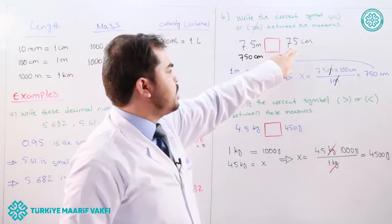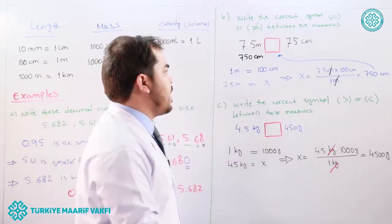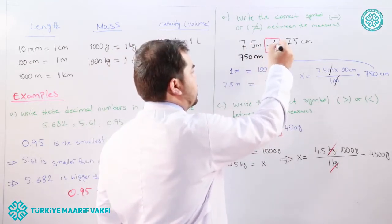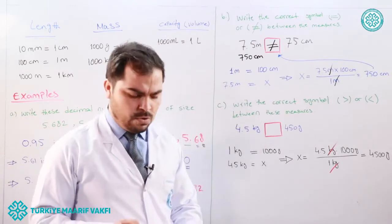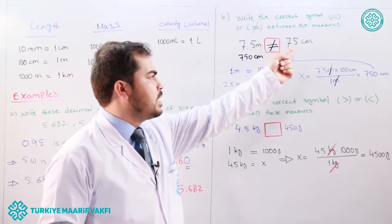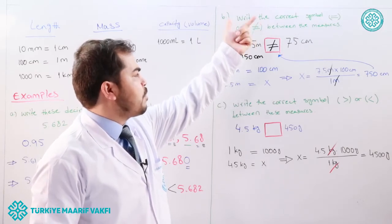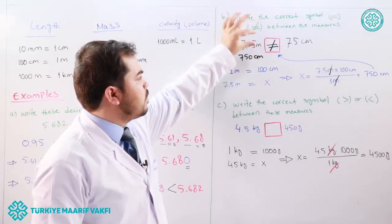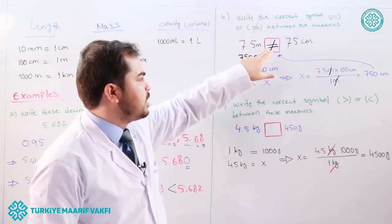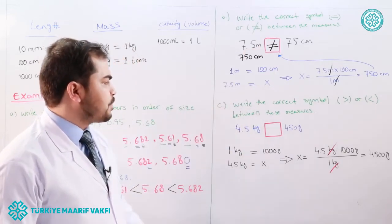So 7.5 meters equals 750 centimeters, but the right side shows only 75 centimeters. Since 750 is ten times greater than 75, the two are not equal. We place an unequal sign in the red square: 7.5 m ≠ 75 cm.